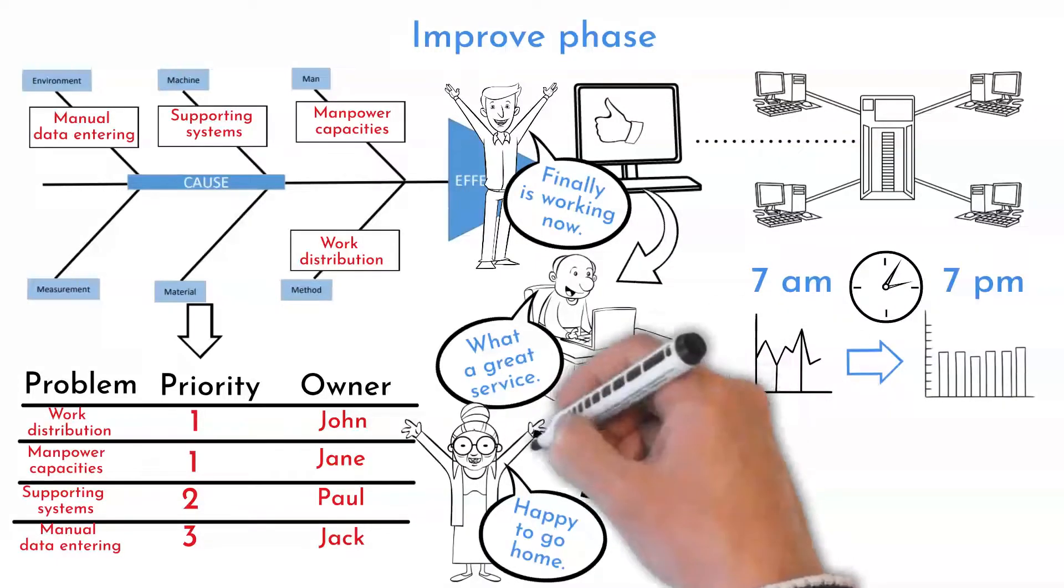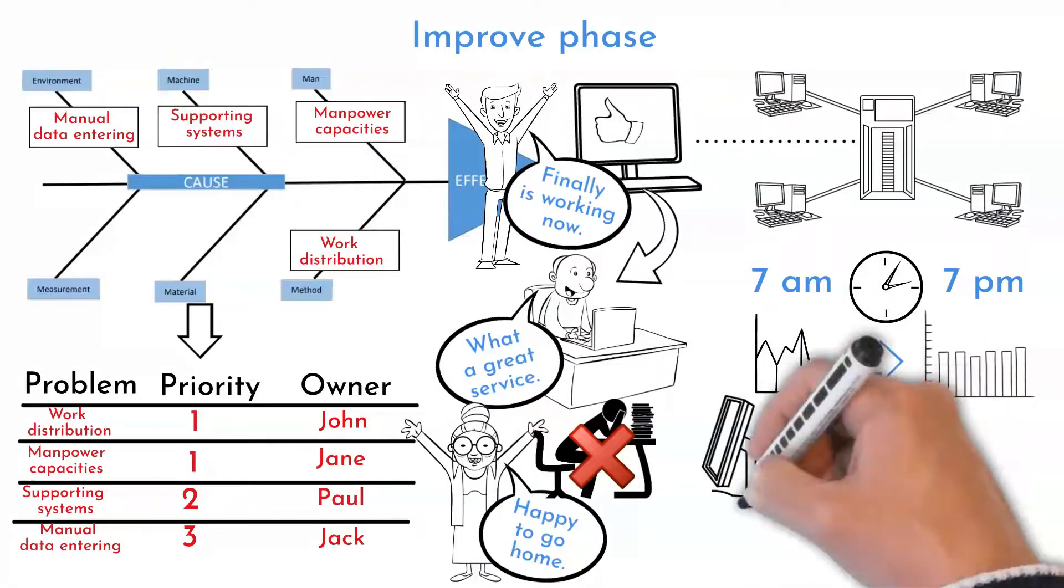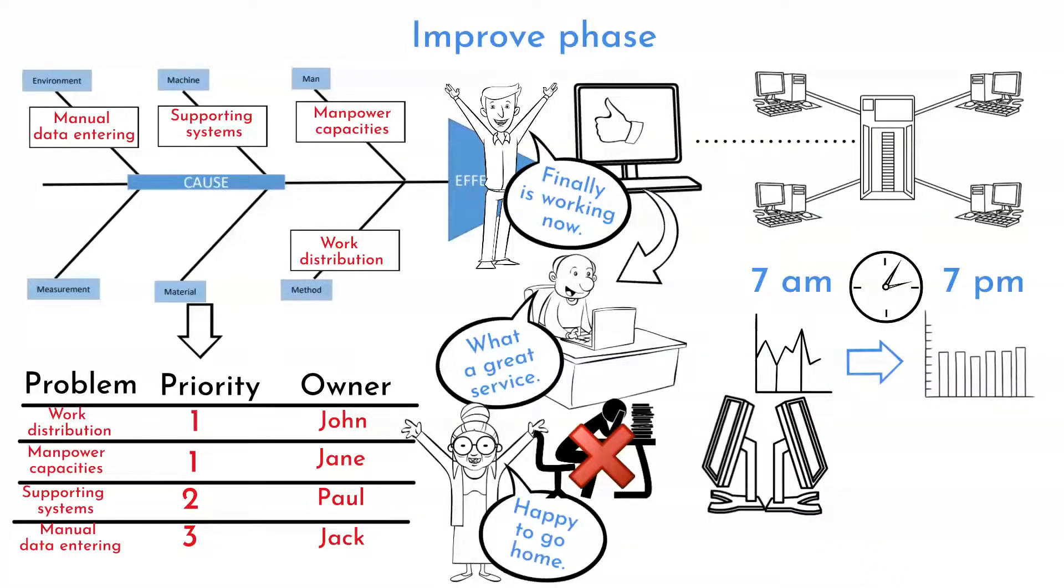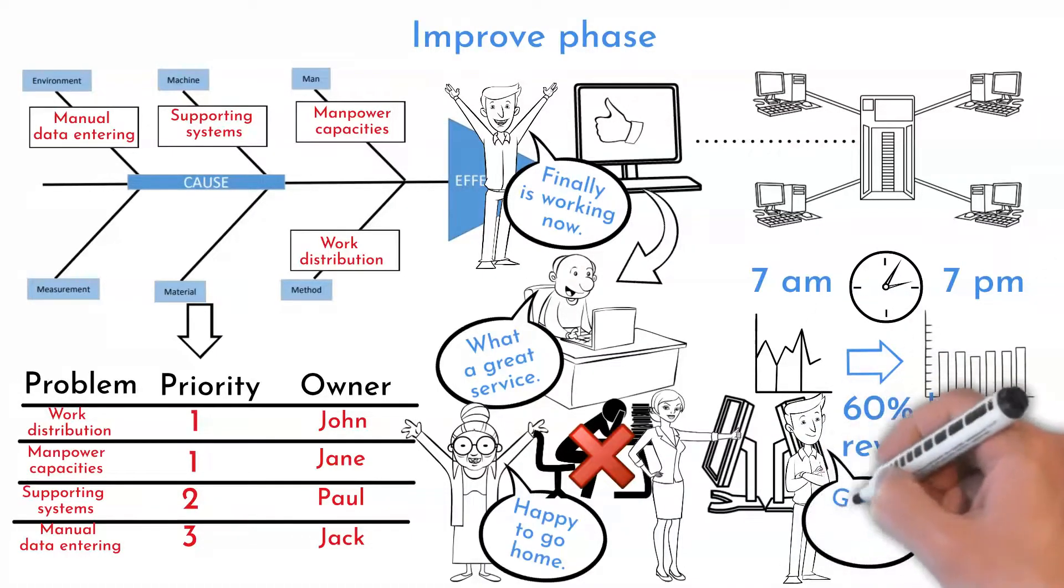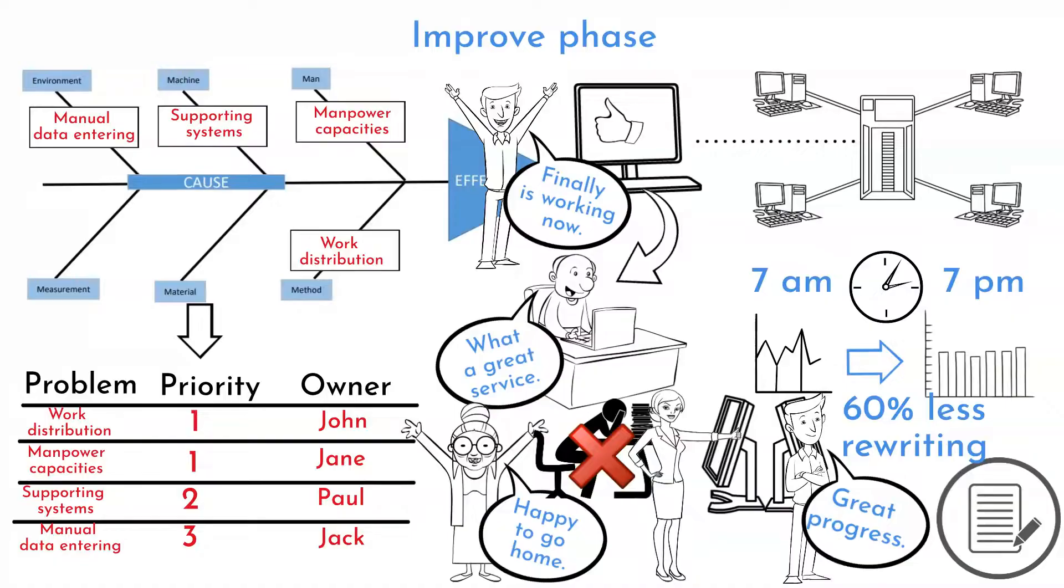To decrease rewriting data from paper form, two computers were installed to waiting room. Computer skilled patients are able to fill their data to system independently. This helped to decrease manual entering by 60 percent. However, paper form is still available.